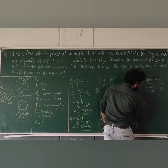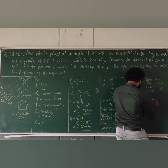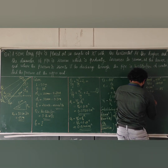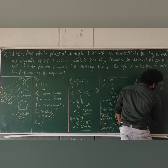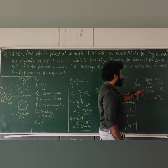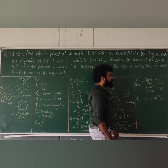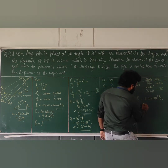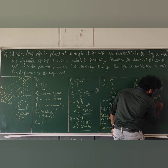P2 is equal to 6.306 into 10 raised to 3 Pascal, or 6.306 kilo Pascal (kPa).